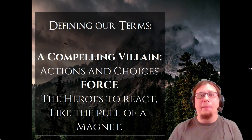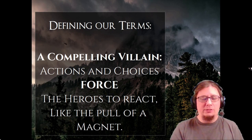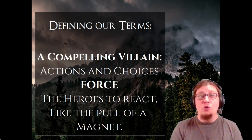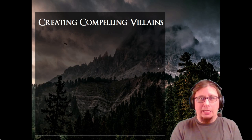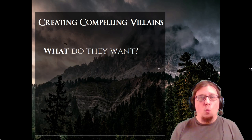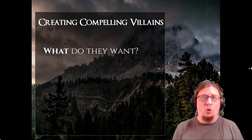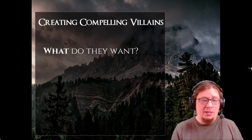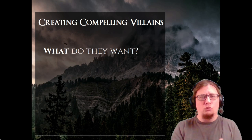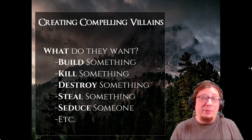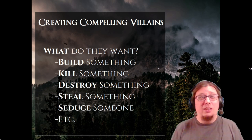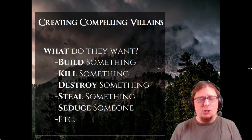So how do we make a compelling villain? We want to create villains that have that magnetic pull for the hero's choices. The first thing you do is identify who your villains are, and then narrow down: what do they want, why do they want it, and how are they going to get it? Let's break each down. The 'what' — what is it that they want? This is ultimately what the heroes are going to be trying to stop from happening. I strongly recommend you use really strong verbs to simplify it: do they want to build something, kill something or someone, destroy something, steal something, seduce someone?